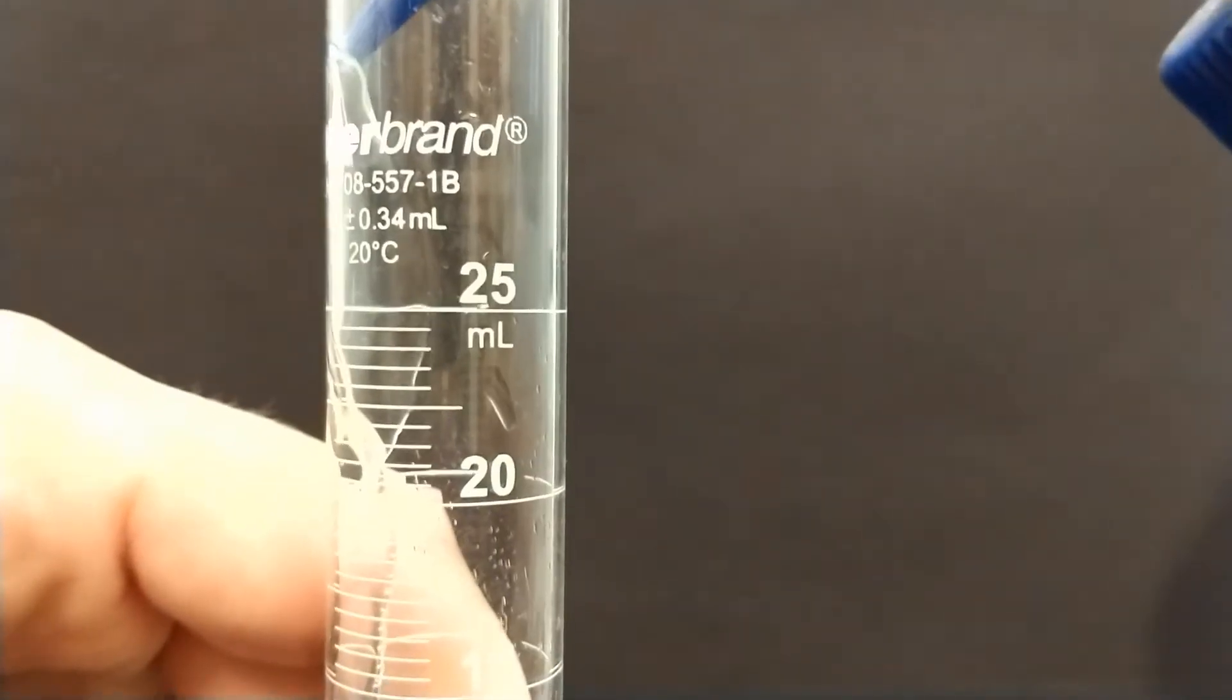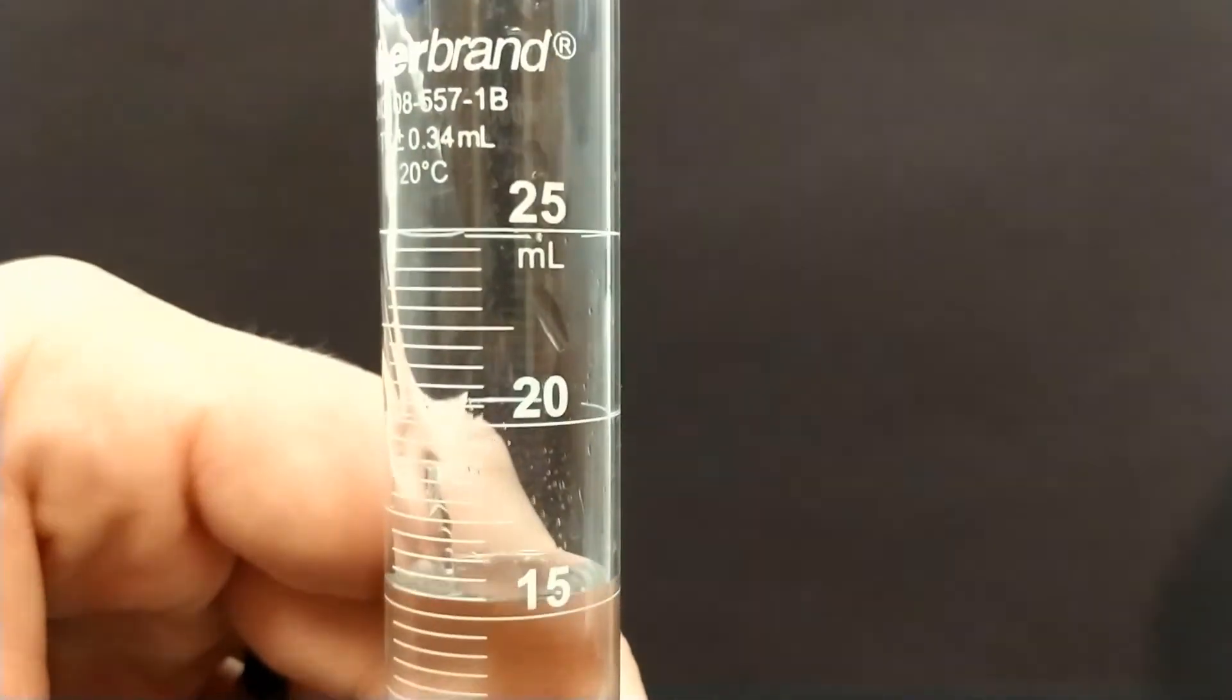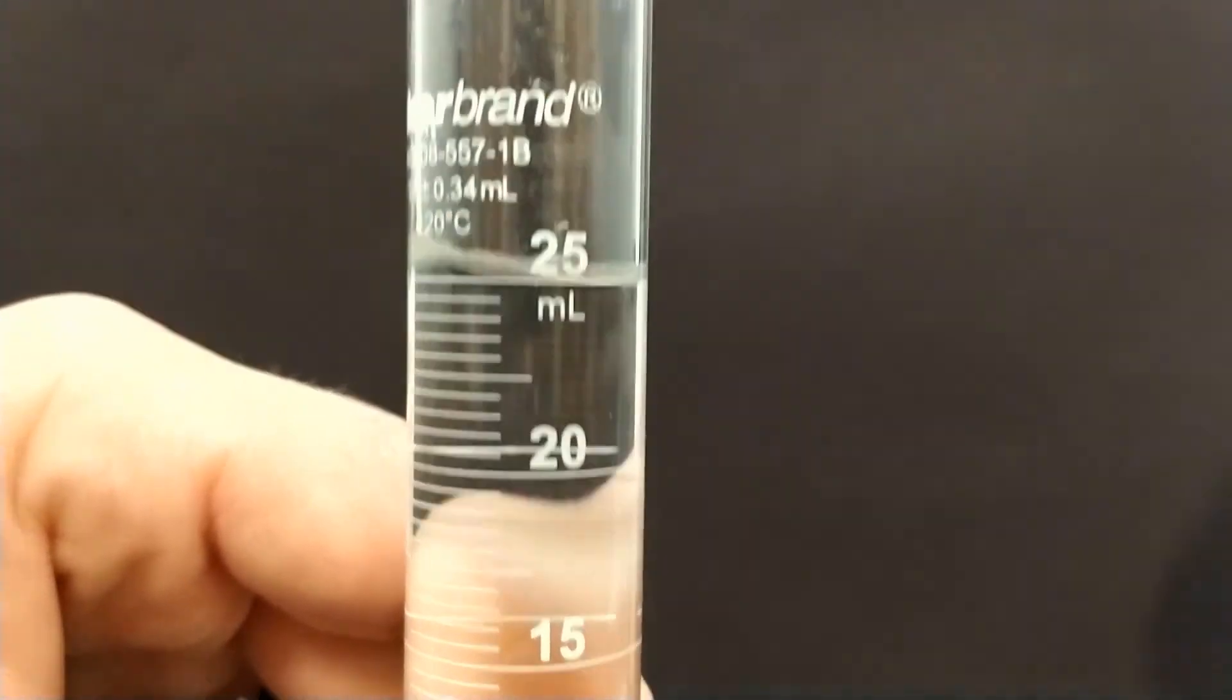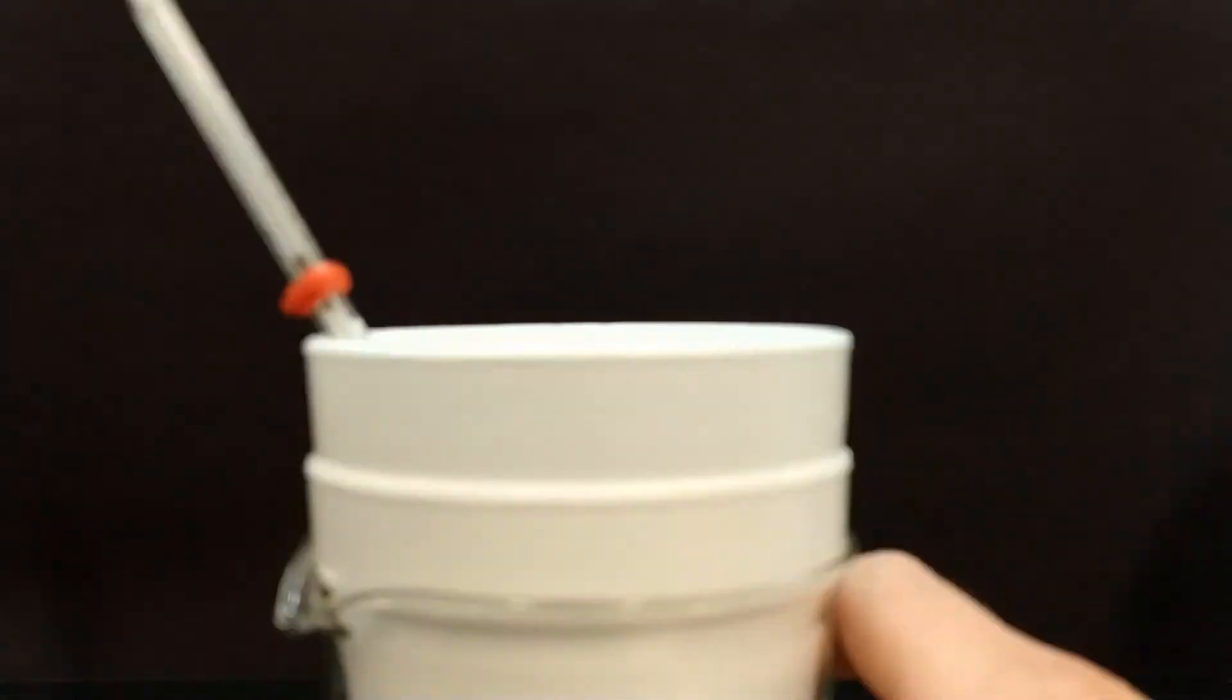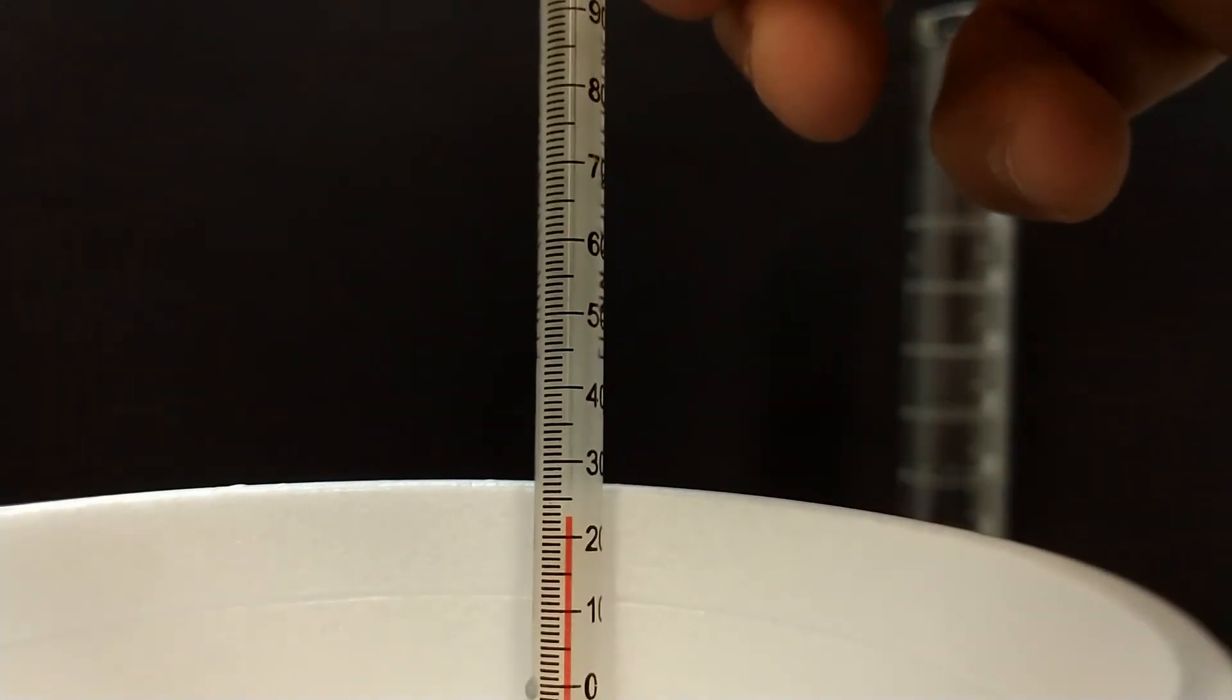The first step in this part will be to measure out 25 milliliters of distilled water into your calorimeter, and then you're going to want to record the temperature of that water in degrees Celsius. So measure out 25 milliliters, put it in your calorimeter, and record its initial temperature.